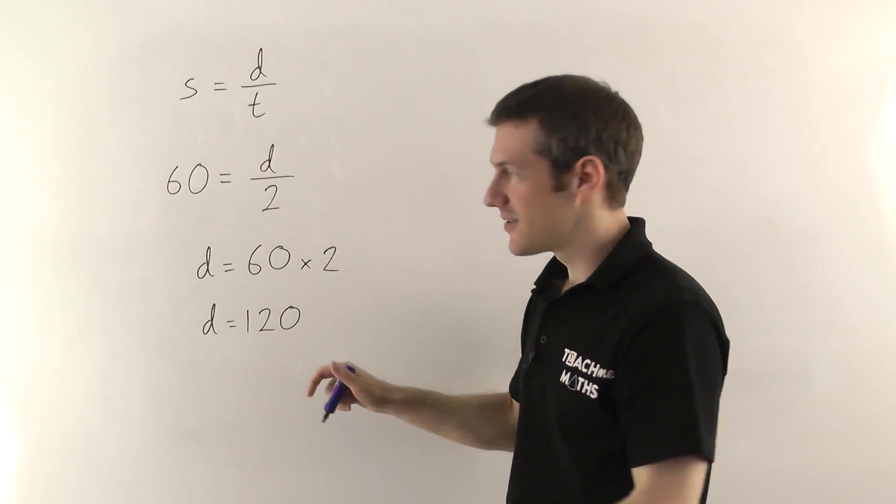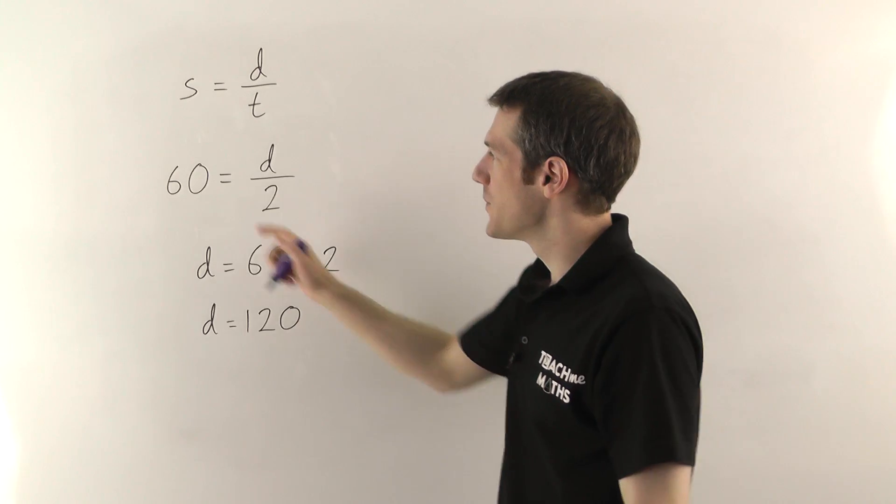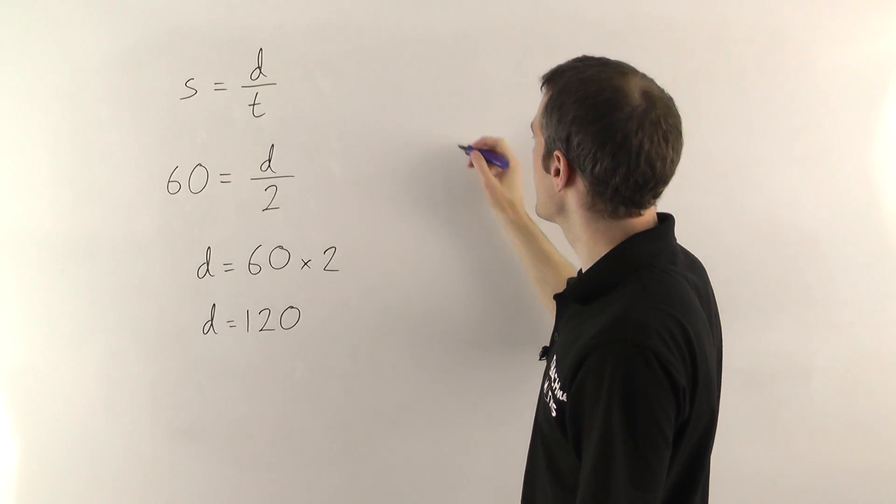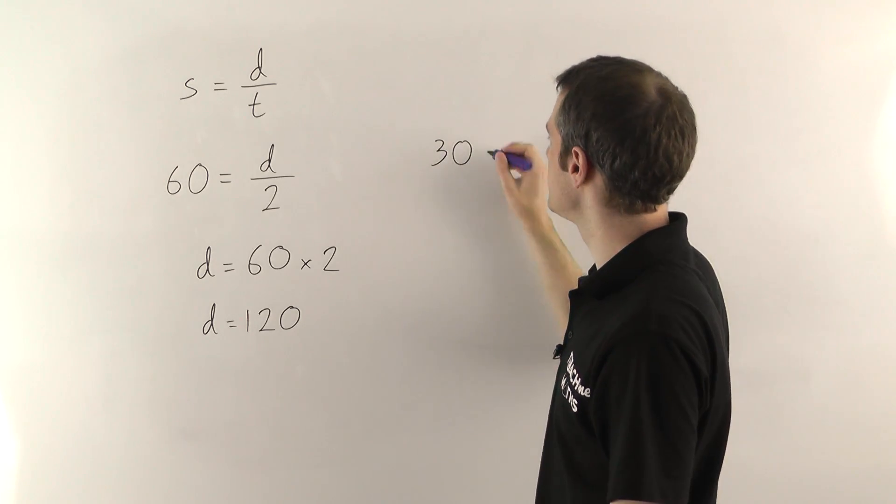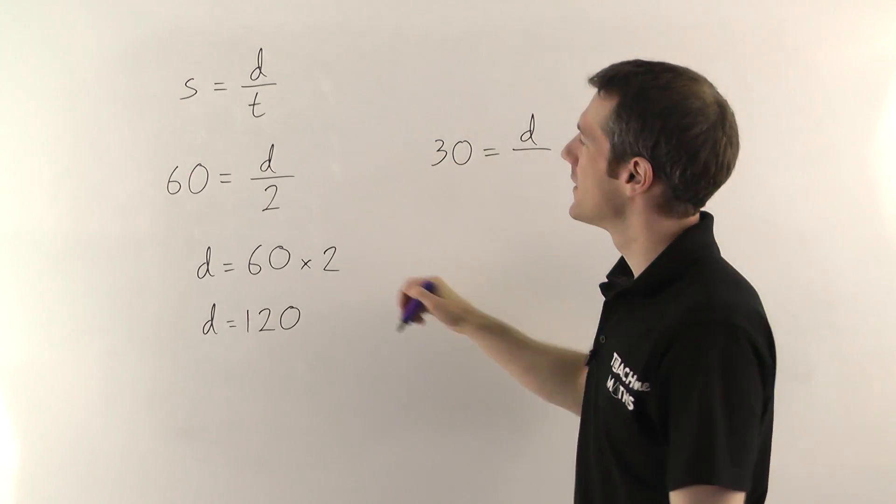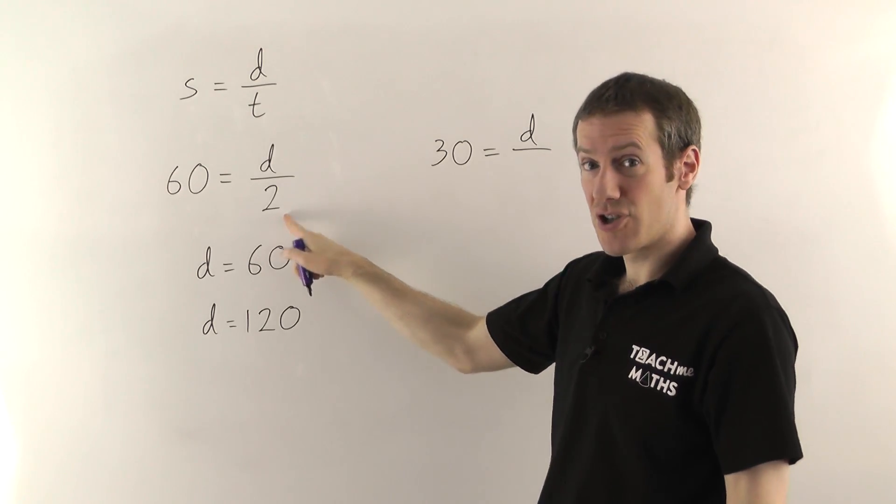So just to extend this example a little bit. Imagine we were traveling the same journey between two points but this time instead of traveling 60 miles per hour imagine we were traveling at 30 miles per hour. We want to find out what the distance is again and this time instead of taking two hours the journey took four hours.